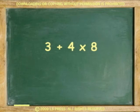Let's do an example. In 3 plus 4 times 8, you must multiply first 4 times 8, then add 3.